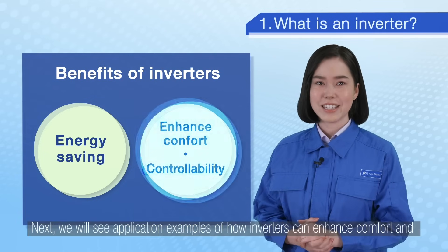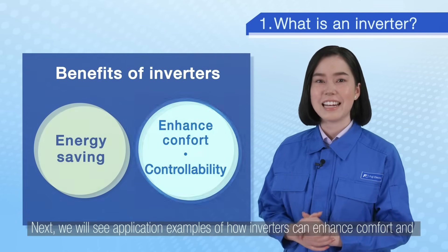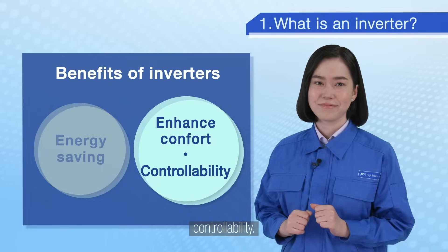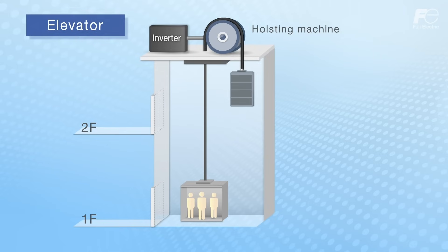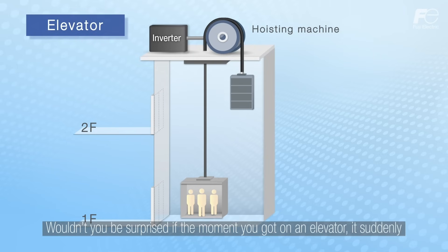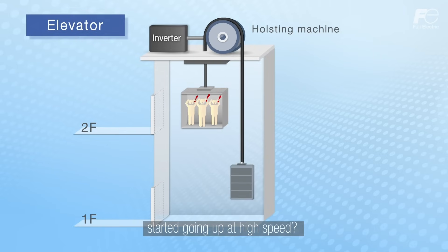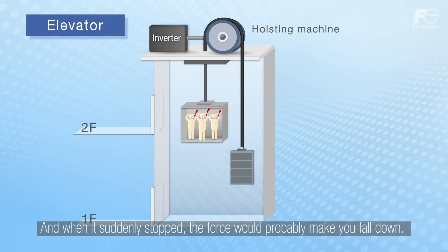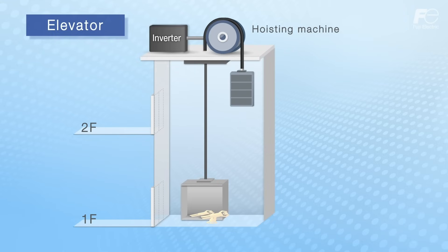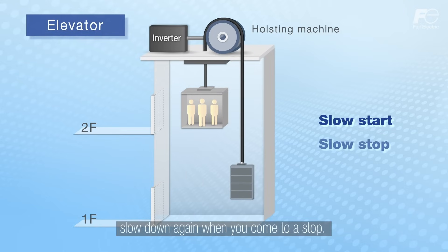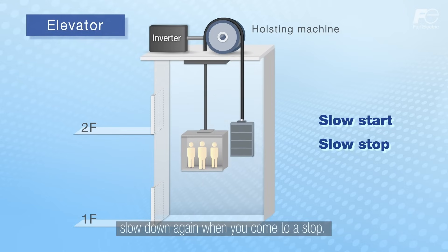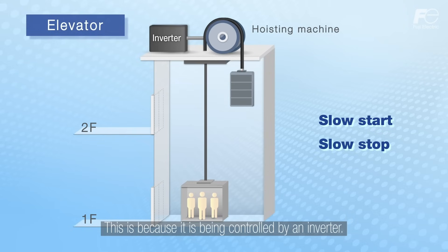Next we will see application examples of how inverters can enhance comfort and controllability. For example, let's consider elevators. I assume that everyone has ridden in an elevator. Wouldn't you be surprised if the moment you got on an elevator it suddenly started going up at high speed, and when it suddenly stopped the force would probably make you fall down. To avoid this, elevators start off slowly, gradually increase in speed and then slow down again when coming to a stop. This is because it is being controlled by an inverter.